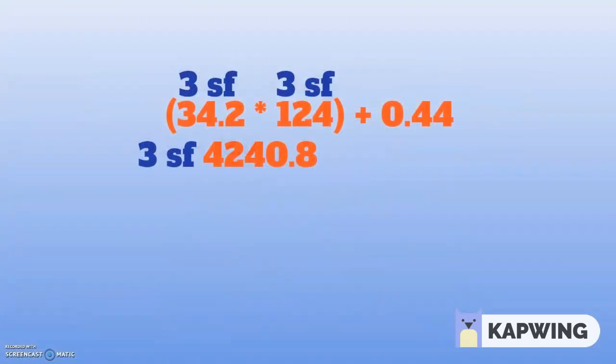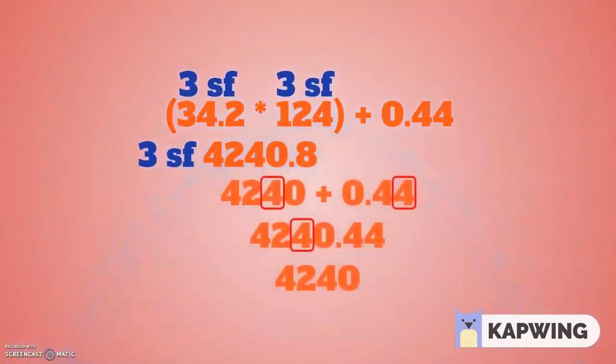For example, I would first multiply these two numbers and round the product to the least number of sig figs. Then, I would add this rounded product to the last number, and finally round the sum to the least precise digit.